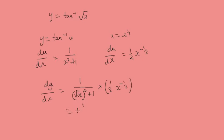And that's going to give us 1 over x because the square root of x squared is just going to be x plus 1 times 1 over 2 square root of x. And we'll just tidy that up by rewriting it as 1 over 2 square root of x times x plus 1.